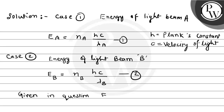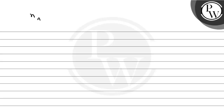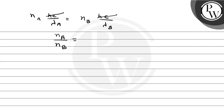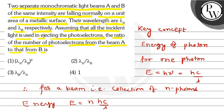Since Ea equals Eb, substituting gives na·h·c upon lambda A equals nb·h·c upon lambda B. The h c cancels from both sides. So the final result is na upon nb equals lambda A upon lambda B. Checking the options, lambda A upon lambda B is option number 2, which is the right answer. I hope you understood it well. Best of luck, thank you.